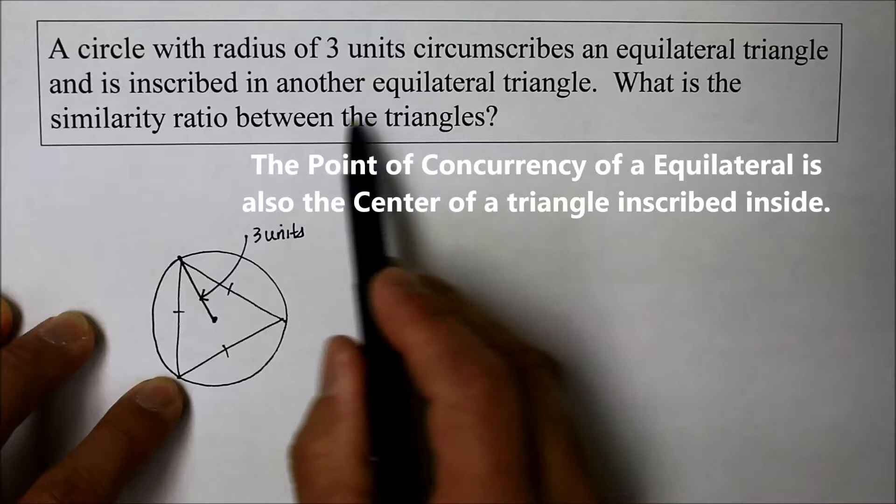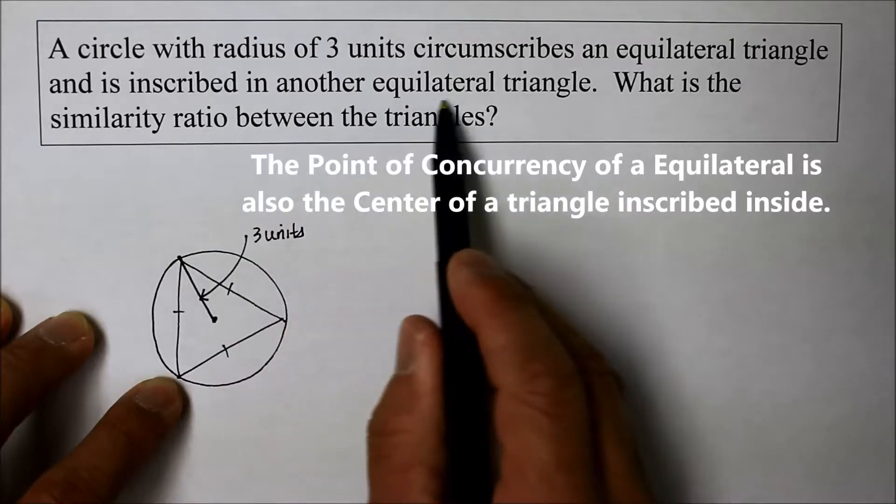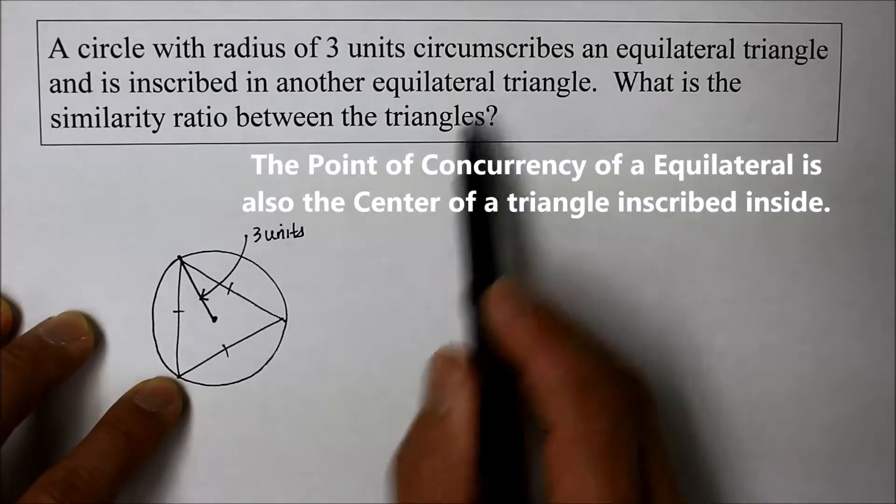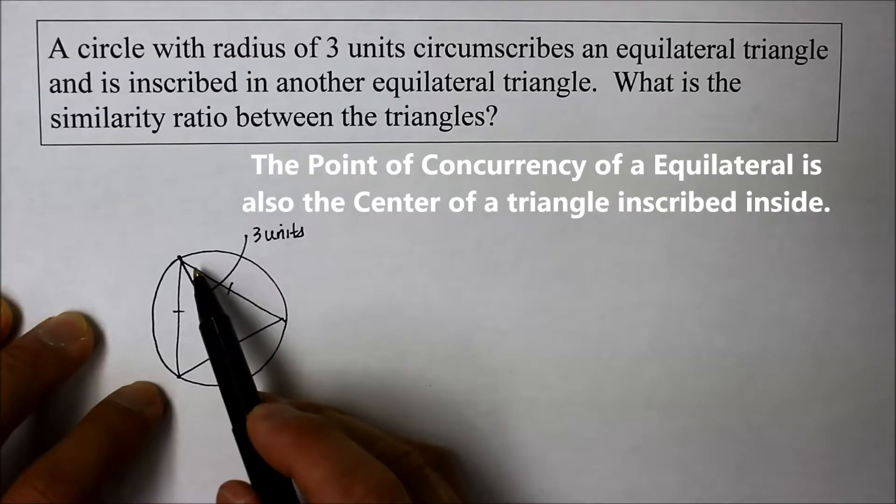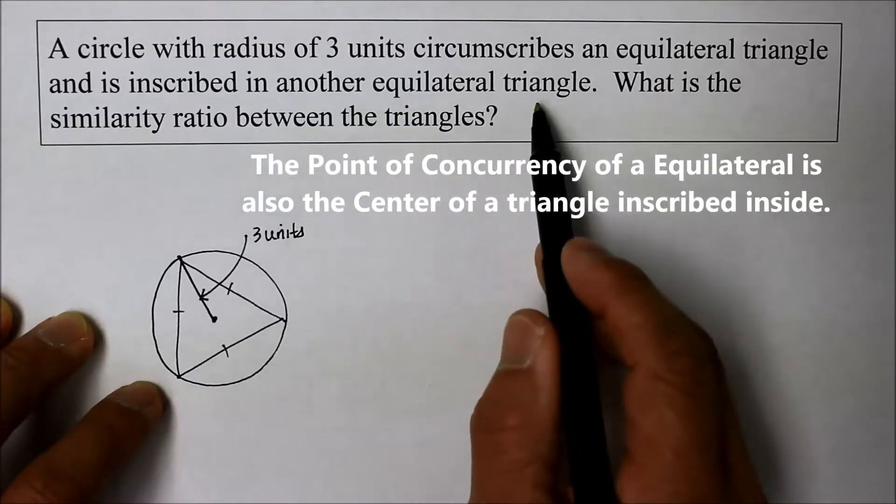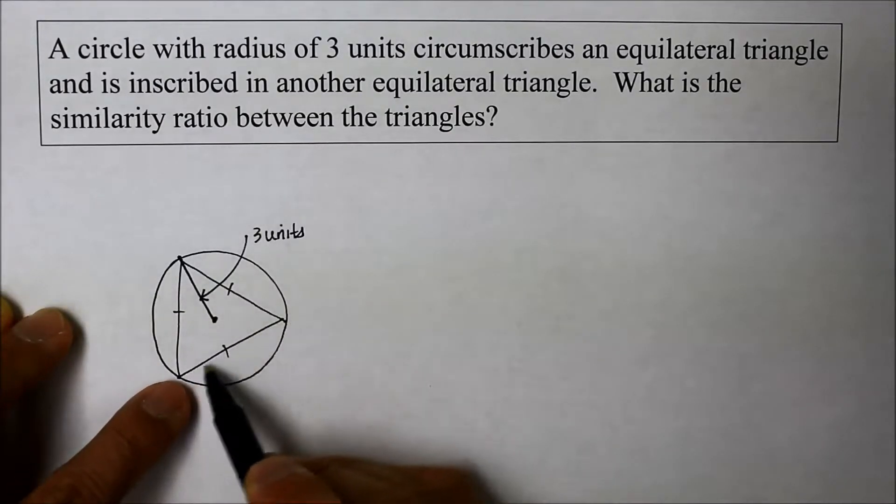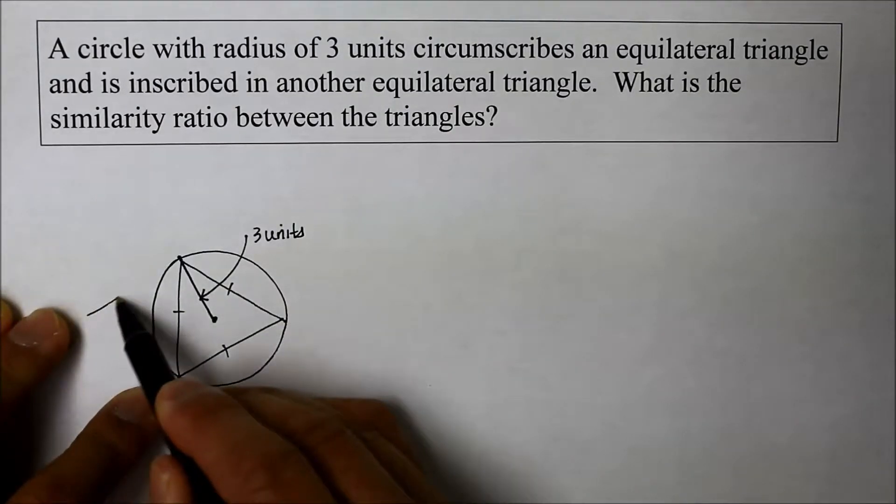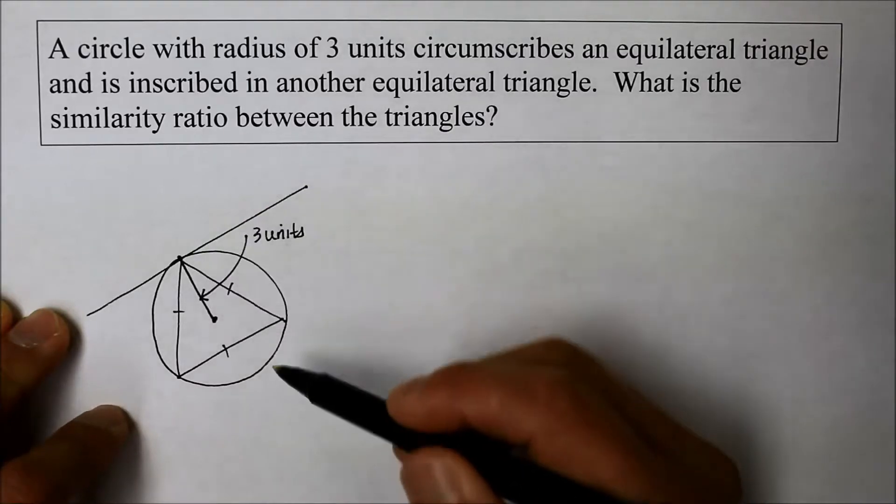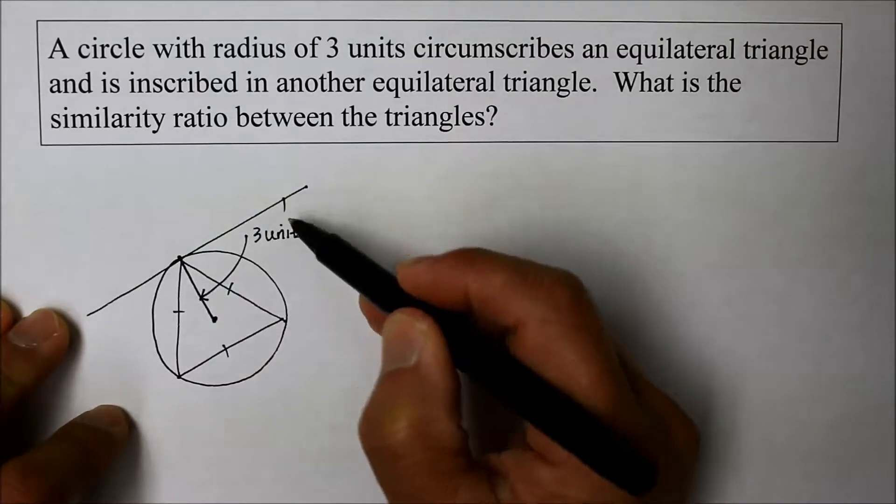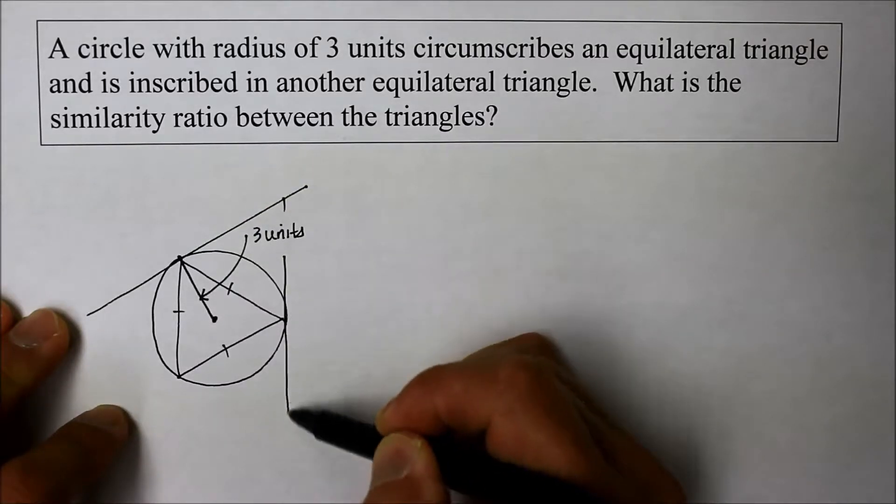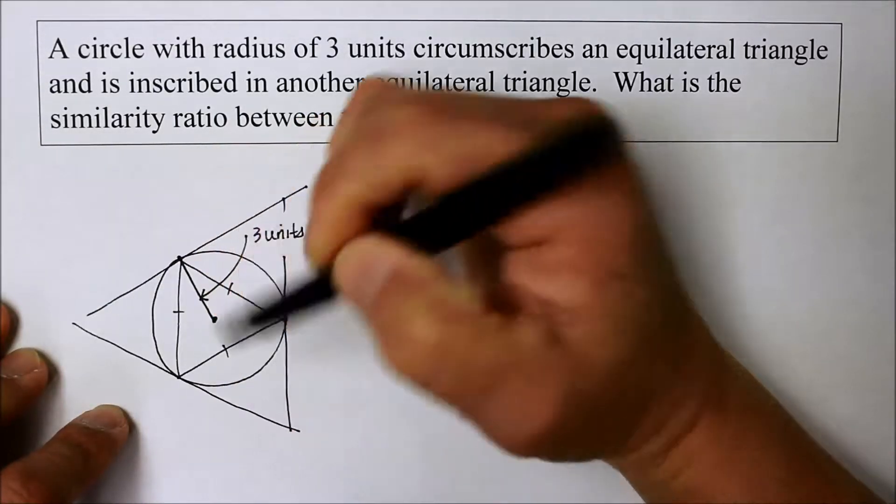However, this whole thing is inscribed in another equilateral triangle. The whole thing is inscribed or circumscribed by another triangle. So let me draw this this way this time. Here I go. Parallel to this base of that triangle. Let's draw this way. Now you draw the way you want to draw. However, I'm going to try to draw symmetrically so it makes some sort of a sense. There.